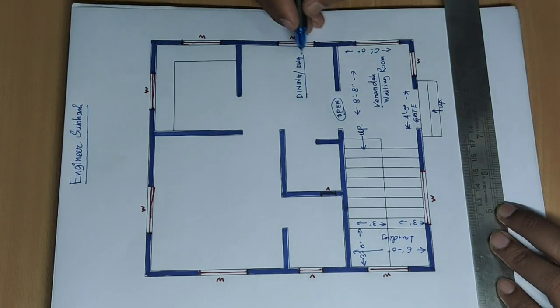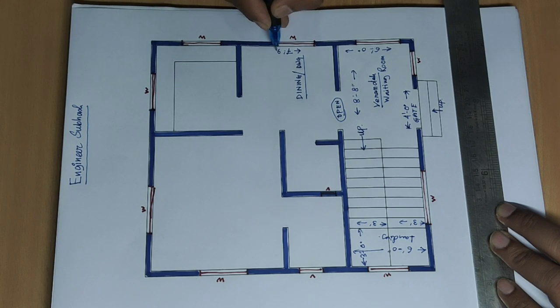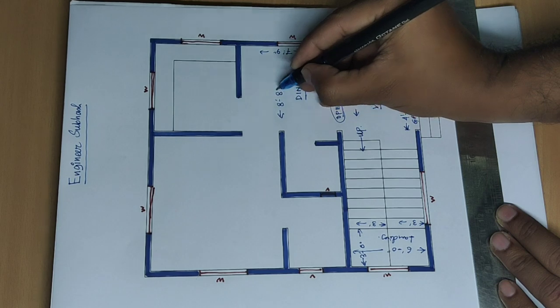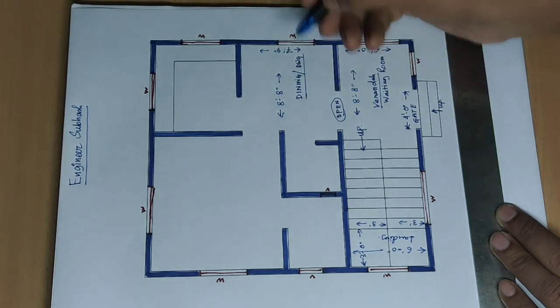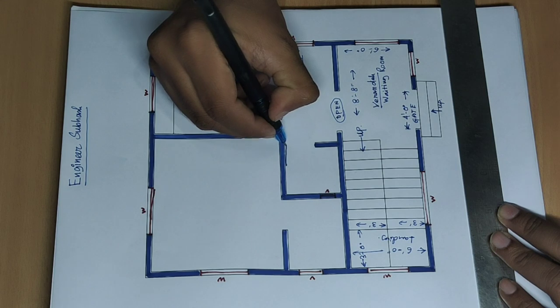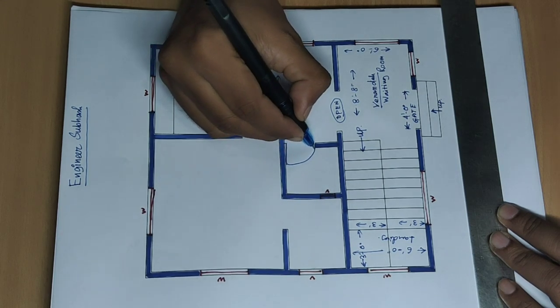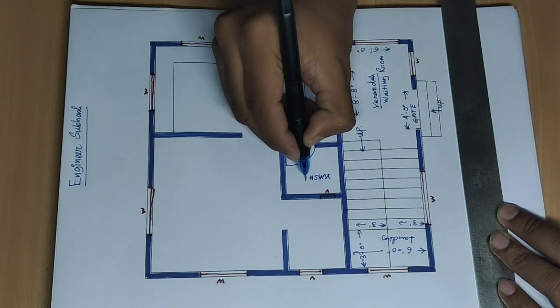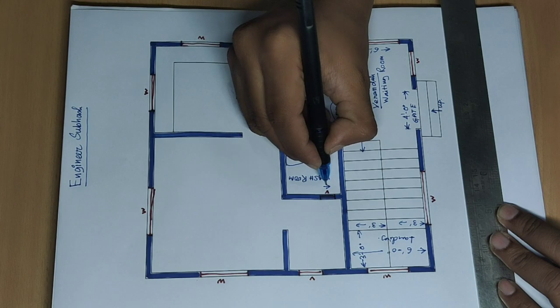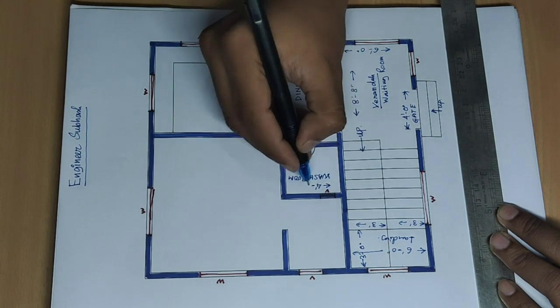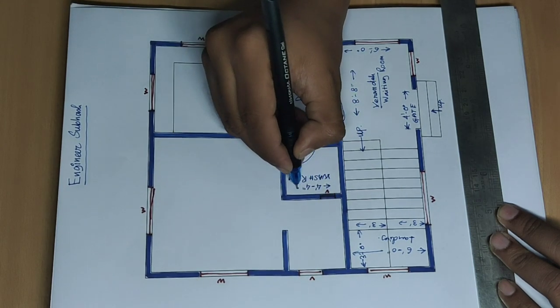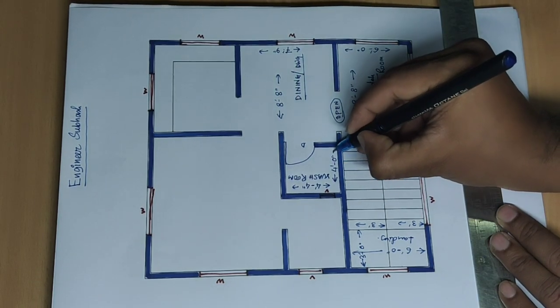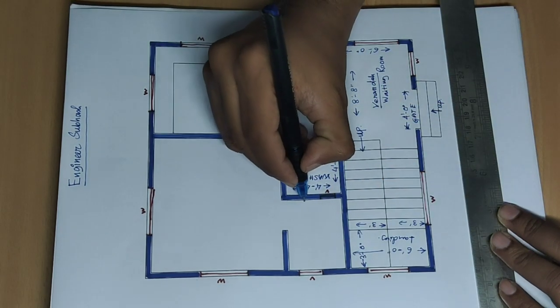Size 7 feet 9 inch and other side 8 feet 8 inch. Next, door provide, door direction washroom, size 4 feet 4 inch. Next, other side 4 feet. Next door.